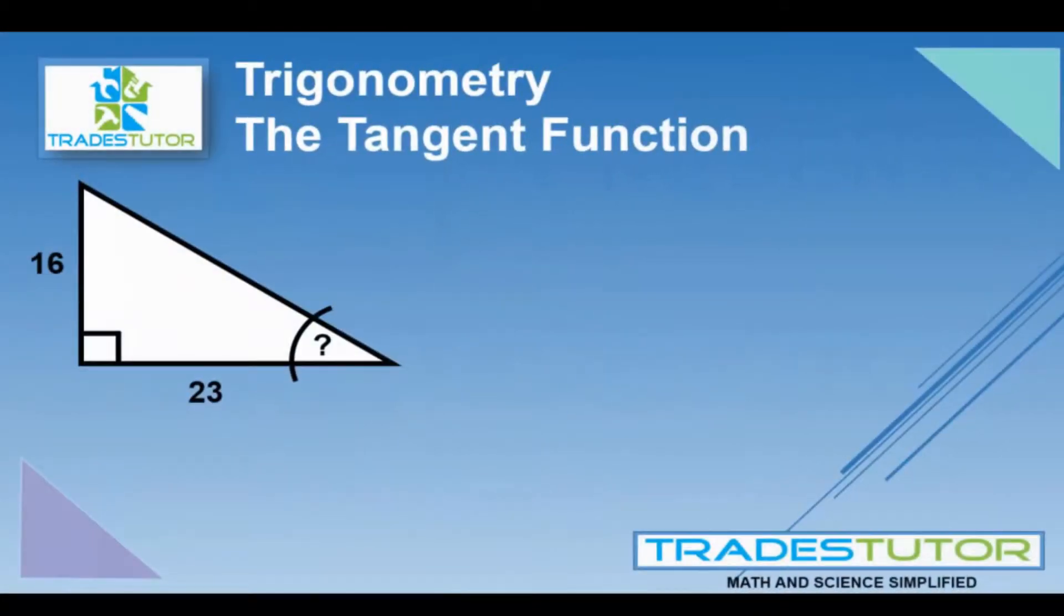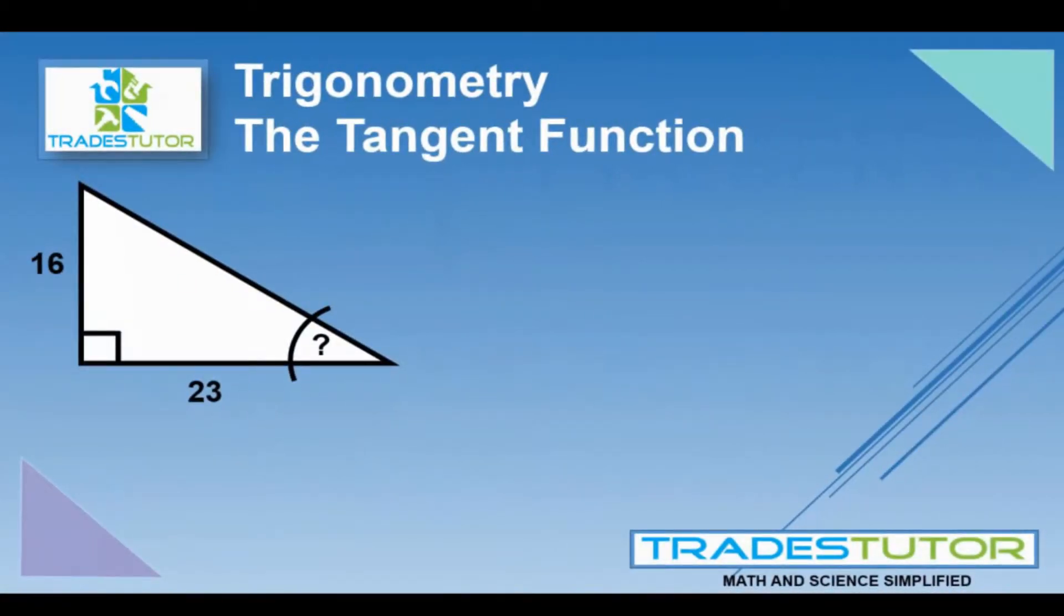Alright, so we start with our triangle. We've got three variables - an unknown angle and two of the sides that we do know. The first thing we want to do is label the sides: the opposite, the adjacent, and the hypotenuse. In this case we're dealing with the opposite and the adjacent.